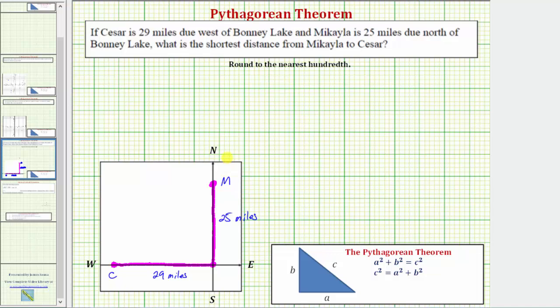We want to determine the shortest distance from point C to point M, which would be this distance here. Notice how we just formed a right triangle, where these two sides would be the legs, and this side would be the hypotenuse. And therefore we can determine this length by using the Pythagorean Theorem.